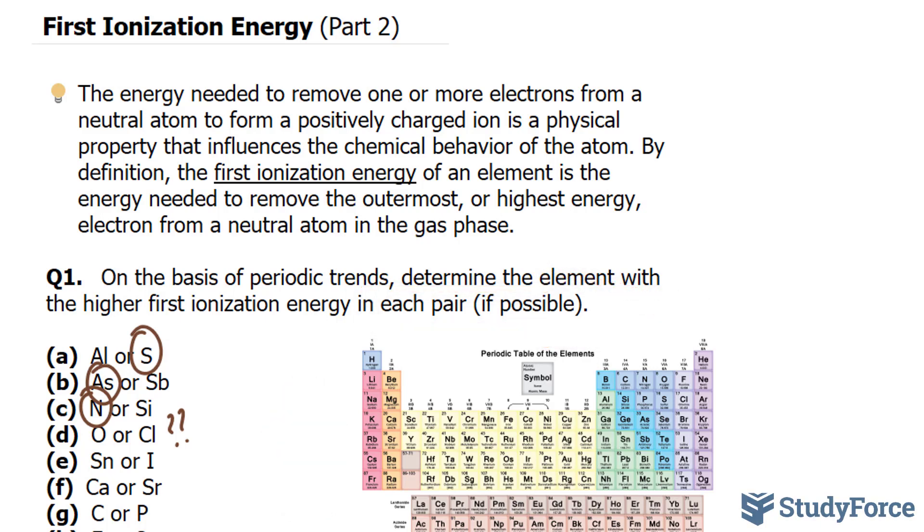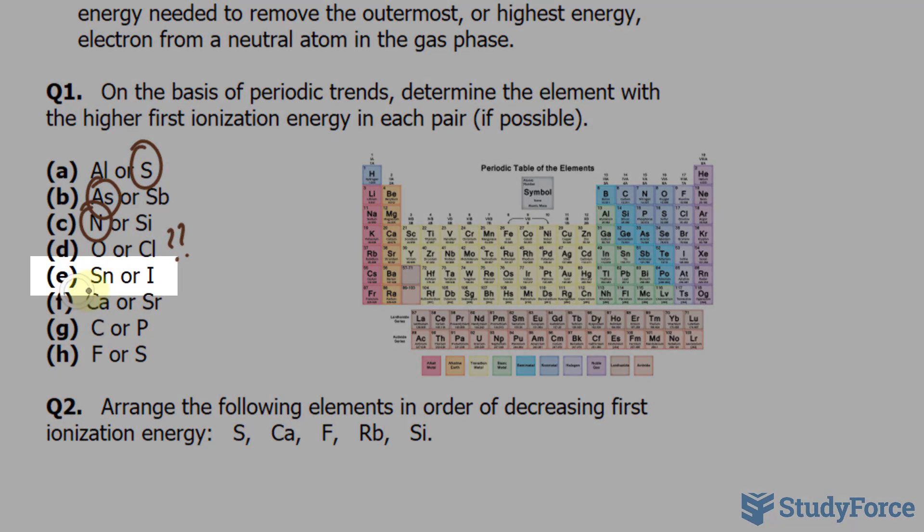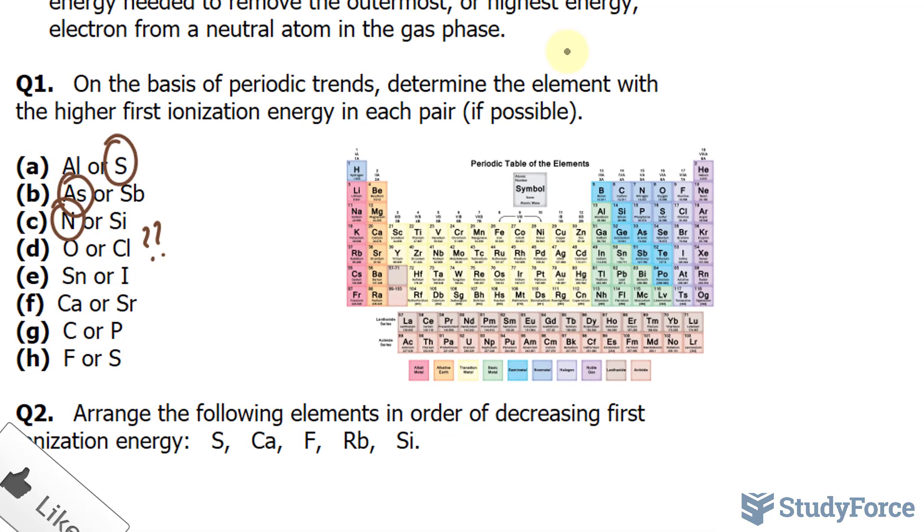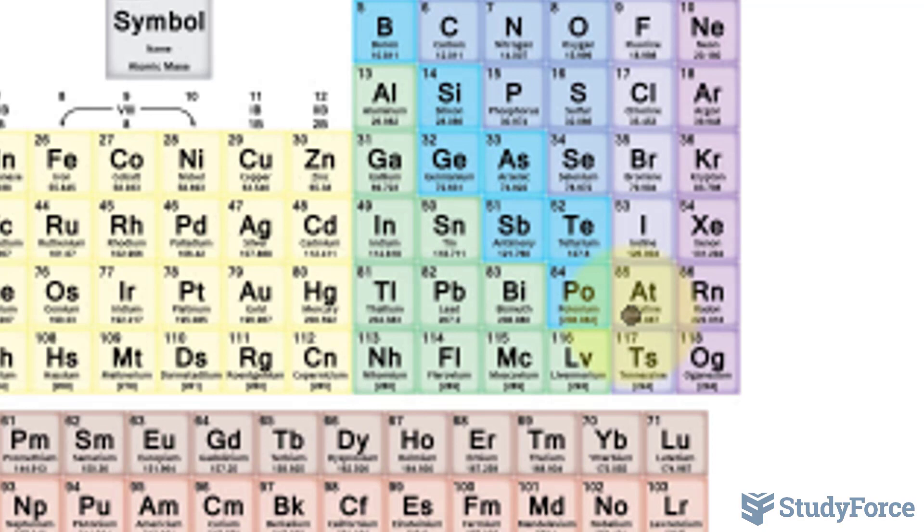Let's continue with E. We have to compare tin to iodine. We'll start by locating these on the periodic table, which I have on screen. Tin is found right here and iodine is found here. Notice that tin and iodine are in the same period, but iodine is to the right of tin. As you move to the right of a period, it increases the ionization energy.